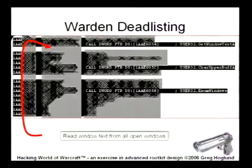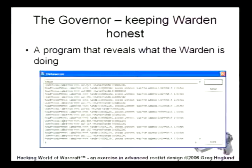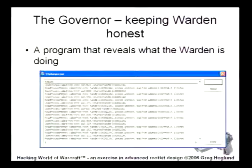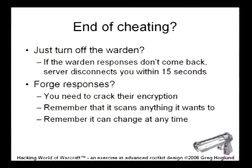In response to this, you can download all the source code for this program off of rootkit.com. I just made a little program — it doesn't actually make the Warden stop working, but it does report all of the activity that it's doing on your system. So the question is, is this going to end cheating? Hell no. You can just turn off the Warden, maybe — but the problem is the server expects a response, so you'll get disconnected. You could probably forge a Warden, but I think that's iffy. You've got to understand, we don't really know what the Warden's going to look for because we haven't received it yet — so how are we going to know what to do? How are we going to emulate that?